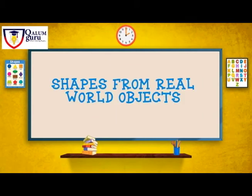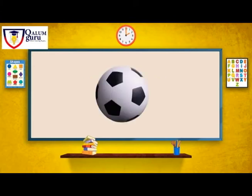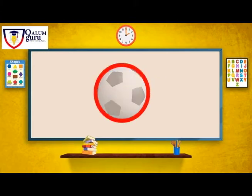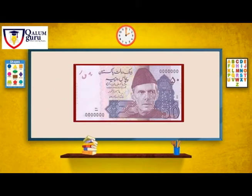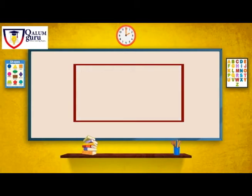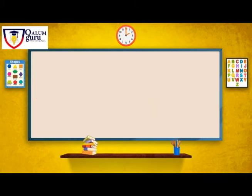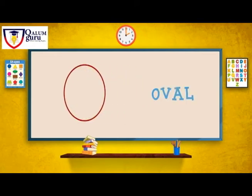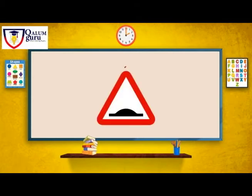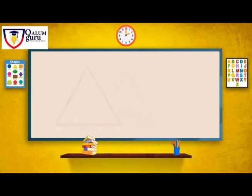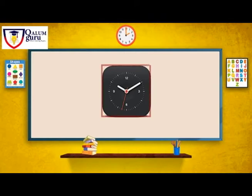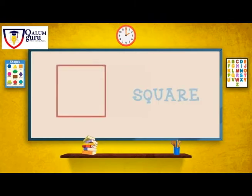Let's identify shapes from real objects. A ball is similar to a circle. A currency note is similar to a rectangle. An egg is similar to an oval. A signboard is similar to a triangle. A watch is similar to a square.